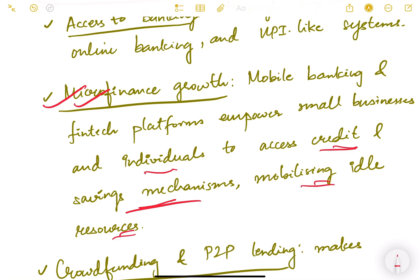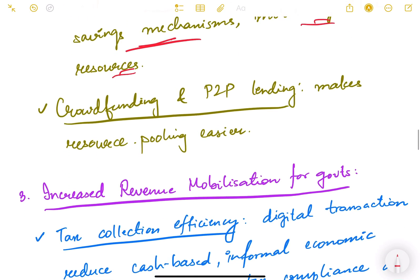For example, ever since stock markets could be accessed through digital and online mode, people have started investing more in stocks, bonds, and mutual funds. Platforms like Groww and Zerodha provide an easy way for individuals — even those who are less financially literate — to invest in various savings schemes. Crowdfunding and peer-to-peer (P2P) lending are also possible, making resource pooling easier and allowing capital to be raised from diverse sources.